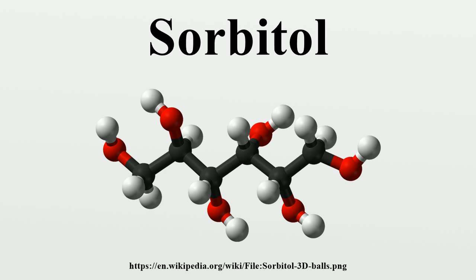It is converted to fructose by sorbitol-6-phosphate-2-dehydrogenase. Sorbitol is an isomer of mannitol, another sugar alcohol. The two differ only in the orientation of the hydroxyl group on carbon-2. While similar, the two sugar alcohols have very different sources in nature, melting points, and uses.